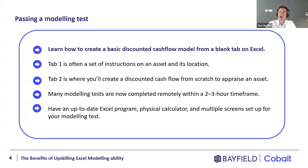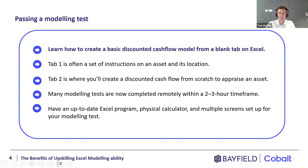It typically asks for an IRR, which can be either levered or unlevered. The more sophisticated and challenging tests can ask for a sensitivity table or a promote structure — all of these obviously ratchet up the difficulty considerably. Starting out, you just need to make sure you can build a basic DCF model from scratch to reach an unlevered IRR — that is the baseline. From there you can progress to levered IRR, sensitivity tables, and promote structures.